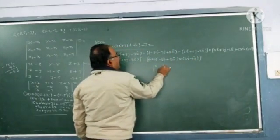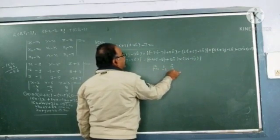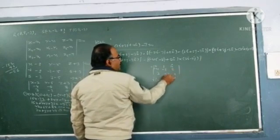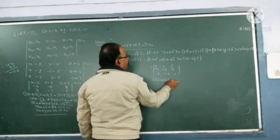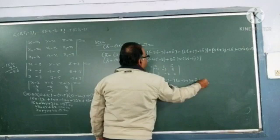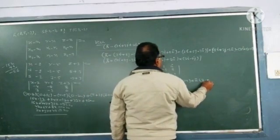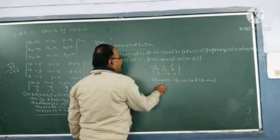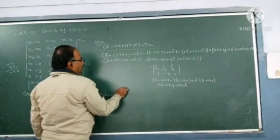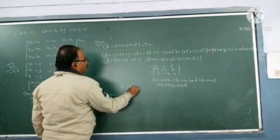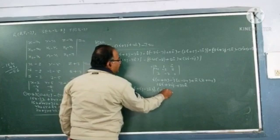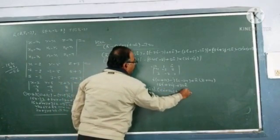Now find the cross product ijk. It is minus 4, minus 8 and 3, minus 2, 0. It becomes i into 0 minus 16 plus 16, minus j, it becomes 16i plus 24j plus 32k.